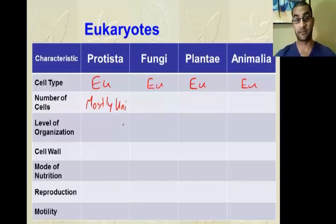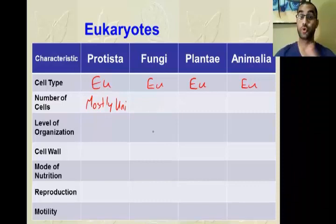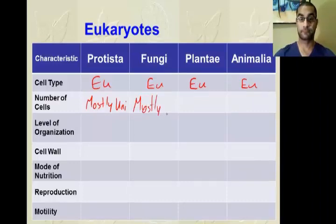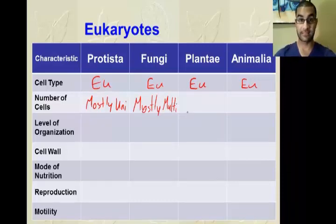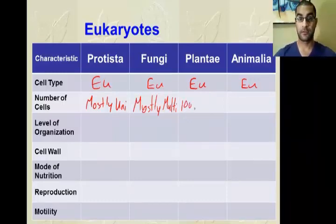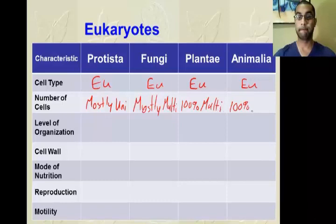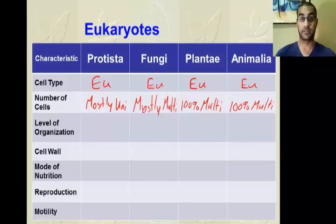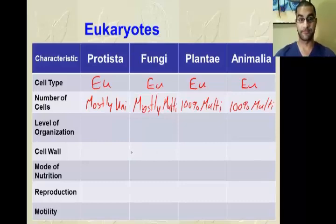Kingdoms Plantae and Animalia are 100% multicellular. In evolutionary development, Plantae and Animalia are thought to be among the most recently developed kingdoms. For levels of organization: Protista is mostly at the cell level since most organisms are unicellular. Fungi is mostly at the tissue level — if you cut into a mushroom you don't see organs, just a whole bunch of fibers representing massive amounts of tissue. Plantae and Animalia reach the organ system level.